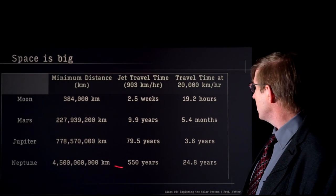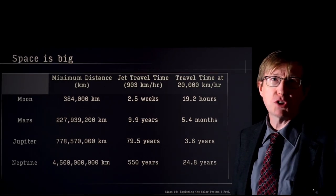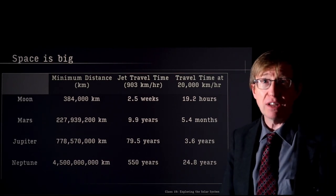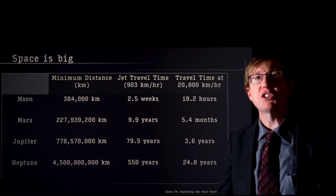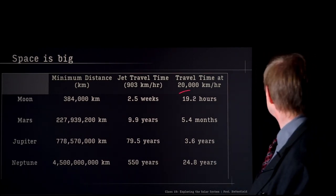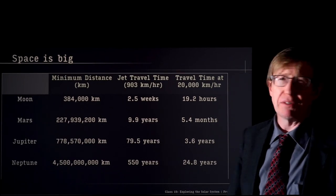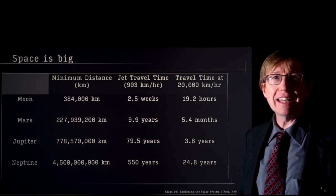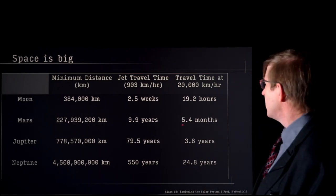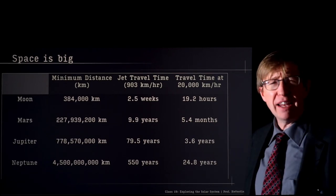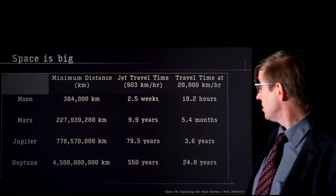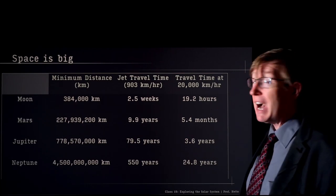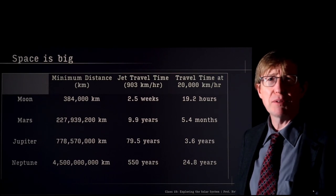Let's go at a higher speed — maybe the speed of the space shuttle or space station, around 20,000 kilometers an hour. At that speed it takes less than a day to get to the moon. Mars is five and a half months — a long time. It's 3.6 years to Jupiter or 25 years to get to Neptune traveling at 20,000 kilometers an hour.